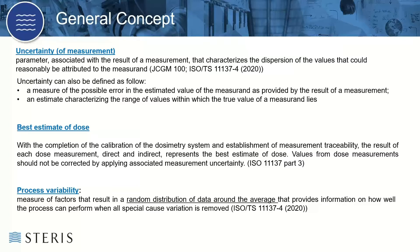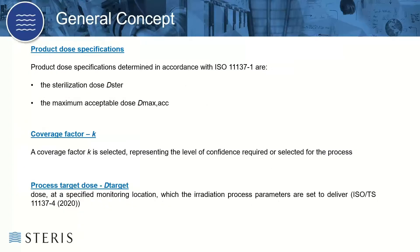Process variability is a measure of the factors that result in random distribution of data around the average, providing information on how well the process can perform when all special cause variation is removed. Special cause variation is variation that is unpredictable or outside our historical experience base. We'll look at product dose specifications: the product dose specification is the range of acceptable dose that can be delivered to a product, which is established during dose setting validation.